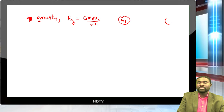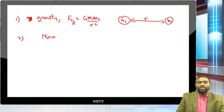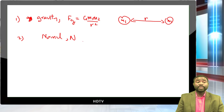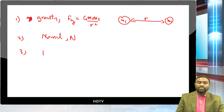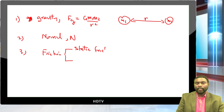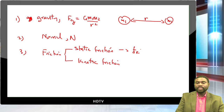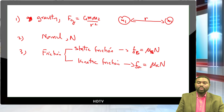Gravity is an attractive force between two objects. The second force is the normal force N, which a surface exerts on another object pressing on it — it is always perpendicular to the surface. The third force is friction, with two types: static friction, defined by f_s ≤ mu_s * N, and kinetic friction f_k = mu_k * N.